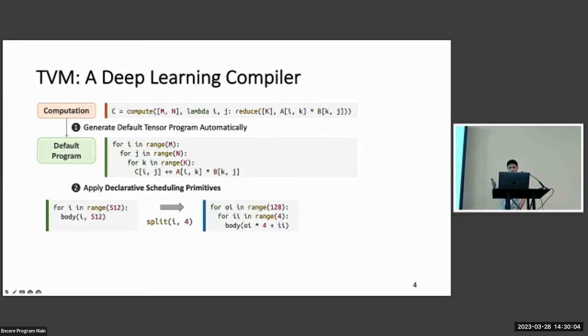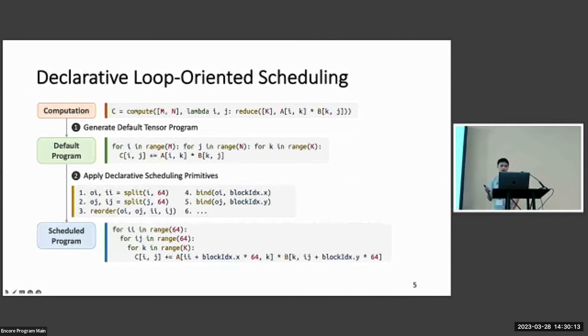So we will apply a bunch of declarative schedule primitives to transform this default program into some more efficient form. For example, we can split a loop into some sub-loops or reorder the loops. There are a bunch of other loop transformations here.